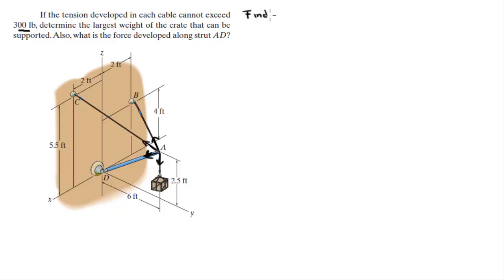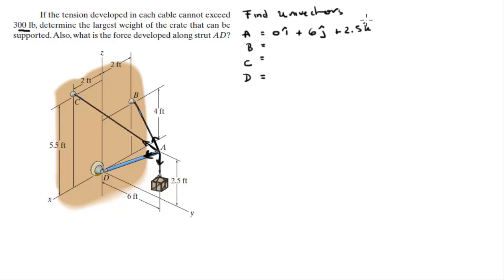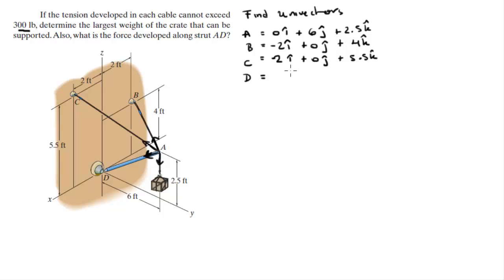The first thing we need to do is find all four unit vectors. To do so, we first need to find the points involved: A, B, C, and D. Point A sits at (0i + 6j + 2.5k), B sits at (-2i + 0j + 4k), C sits at (2i + 0j + 5.5k), and D sits at the origin (0, 0, 0).